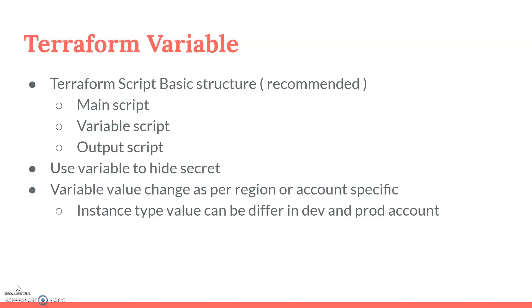Terraform uses variables to hide secrets. The key point is that we cannot give our username and credentials directly in the script — we should use variables where we can hide the secrets. Another reason variables are required is that values can change per region or per account. For example, a production account may have a different instance type than a QA or dev account, so we use variables to pass the correct value based on the account and region.